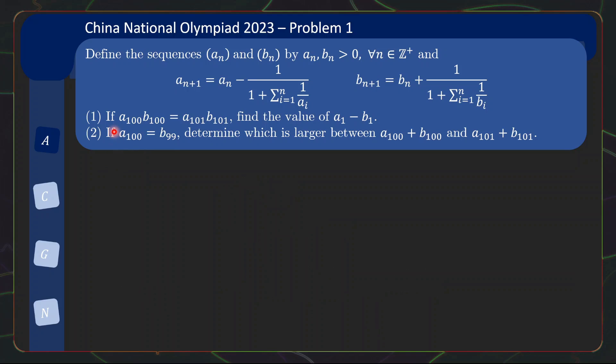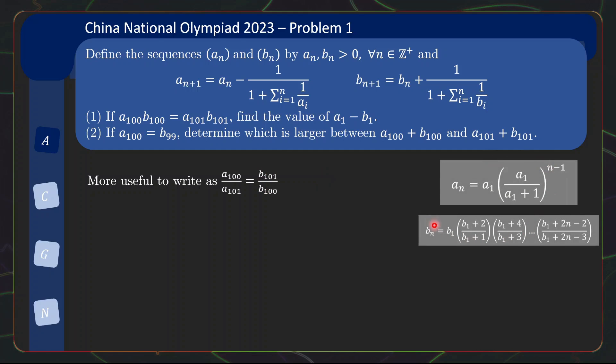So for part 1, we are given that a100, b100 equals a101, b101, and we are supposed to find the value of a1 minus b1. Quite naturally, we will want to rewrite the given condition as a condition about the ratios of a's and the ratio of b's. This is because if we recall the closed form expression, once we have the ratios of successive terms, it's quite easy to work out that the ratio of successive a in this case is 1 over the common ratio, which is this. And the ratio of the successive b here is just the last term of the product in b101, which is given by this. Now that we have this expression, we can simplify it as 1 plus this equals 1 plus this. So a1 equals b1 plus 199. So a1 minus b1 is simply 199.